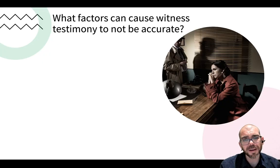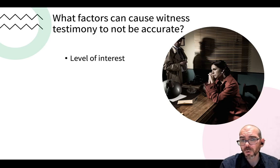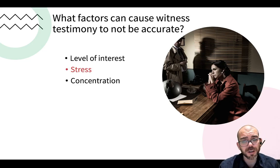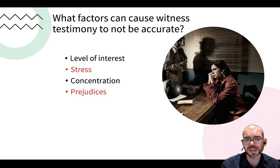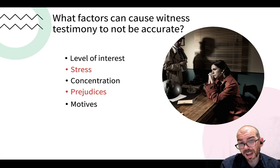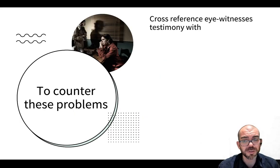Knowing this about observation, can we trust eyewitnesses of crimes? Well, they're valuable, but think about their memory, think about their perceptions — there are a lot of factors that go into what an eyewitness experiences that make us want to thoroughly question their testimony. What was their level of interest? Maybe they were too busy taking a selfie when the crime happened and weren't paying attention. Were they stressed? If you're stressed, you're not going to remember as much. How much were they concentrating at the moment? Do they have any prejudices that might make them think one way or another on what they saw? What are their motives? How long has it been since they saw the crime? Memory fades over time.